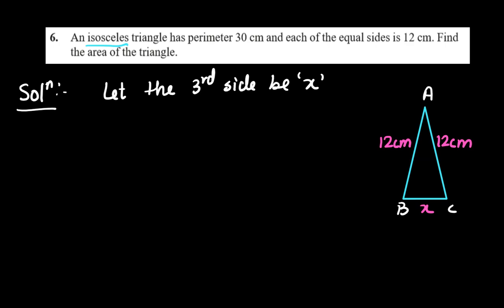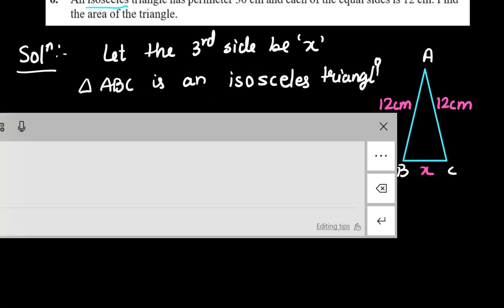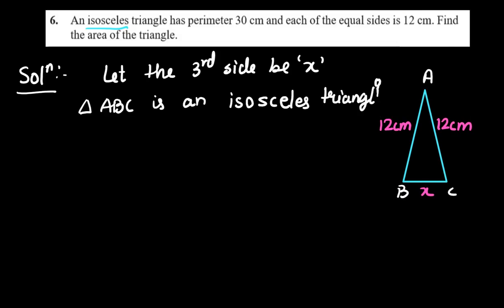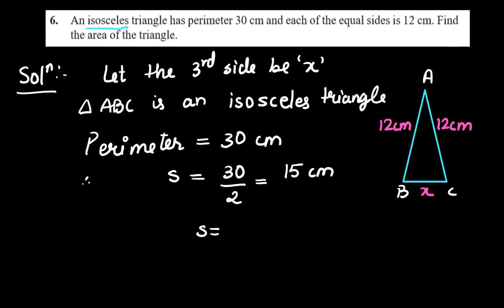Let the third side be x. Isosceles triangle, that means two sides are equal. So perimeter is given. What is the perimeter over here? Perimeter is 30 cm. Therefore, semi-perimeter will be 30 by 2, and that is 15 centimeter. I'll just keep semi-perimeter in the box.